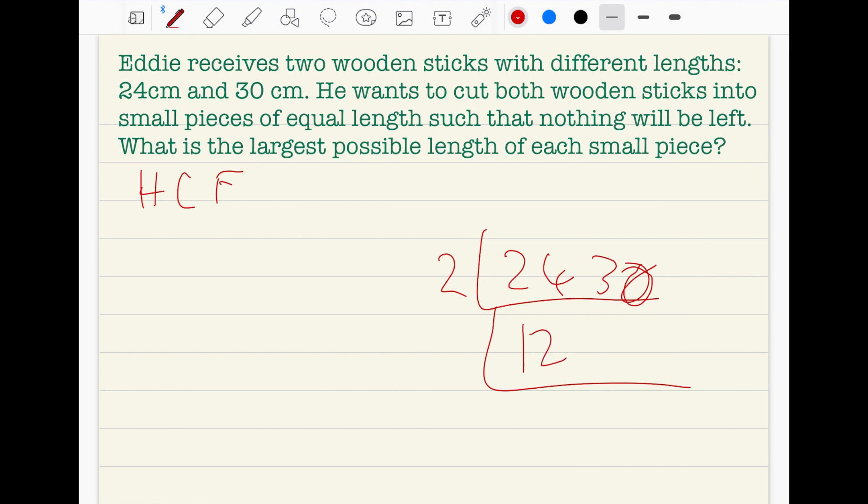Those two numbers can be divided by three. So 12 divided by three is four, and 15 divided by three is five.